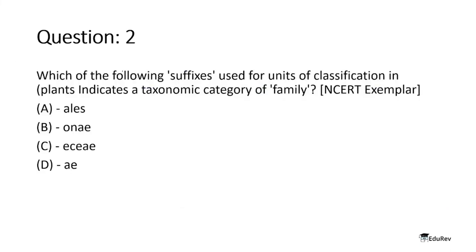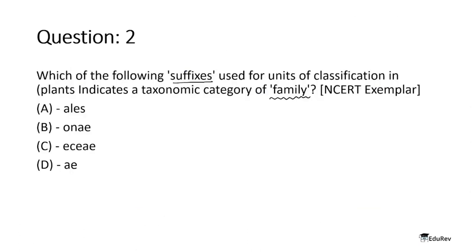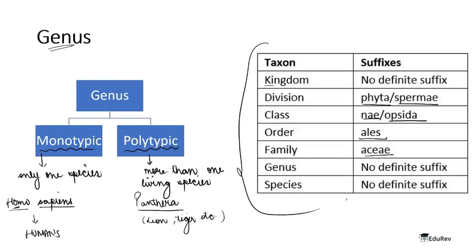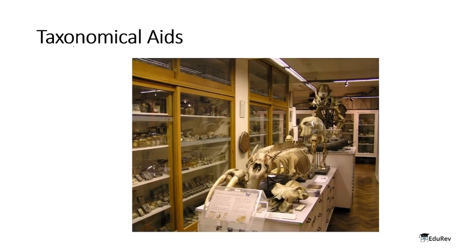Question: which suffix used for units of classification in plants indicates a taxonomic category of family? Referring to the table, the suffix for family is aceae. The answer is option C: aceae.